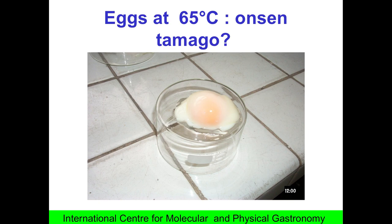An egg that was cooked for two hours at 65 Celsius degrees. So you see the egg yolk is still liquid. The white is translucent. It's very soft. And at that time, some friends of mine told me, wow, but we know that in Japan it's onsen tamago.